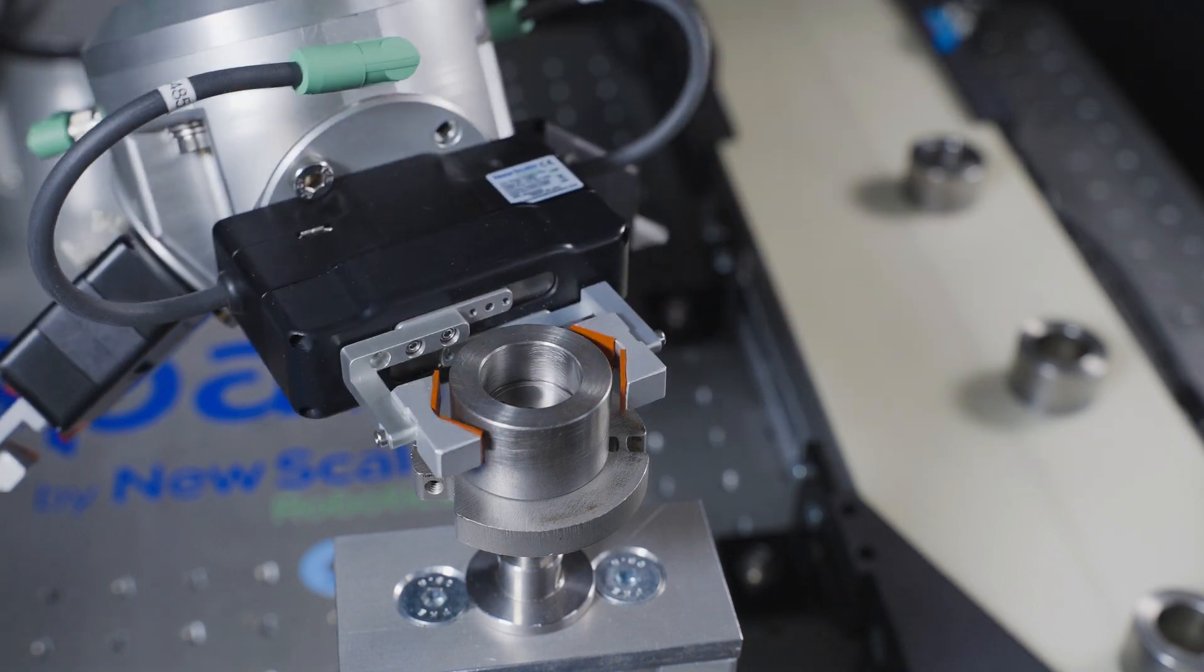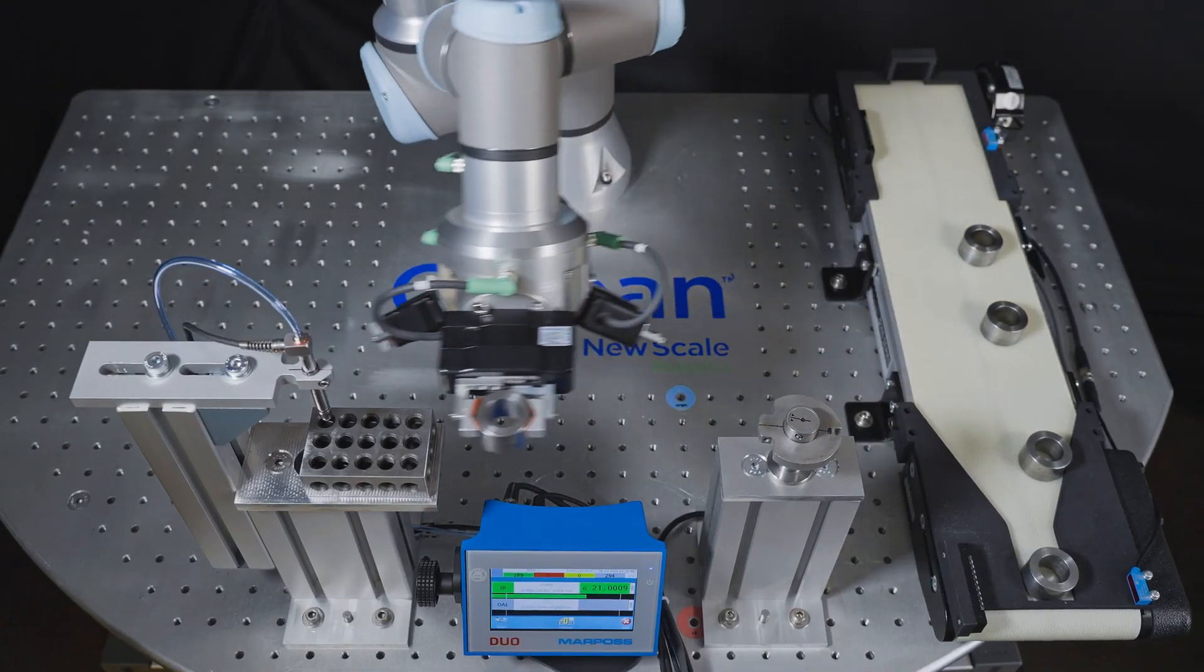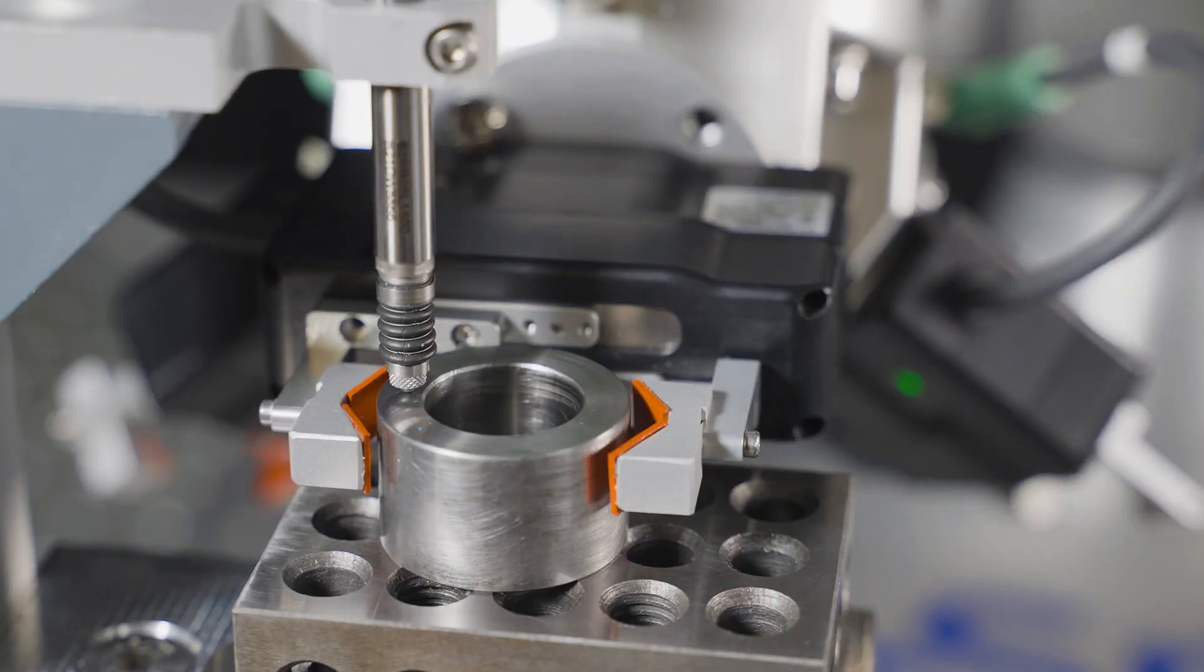The second gripper caliper approaches horizontally to pick and place the part below the drop gauge where the height is measured.